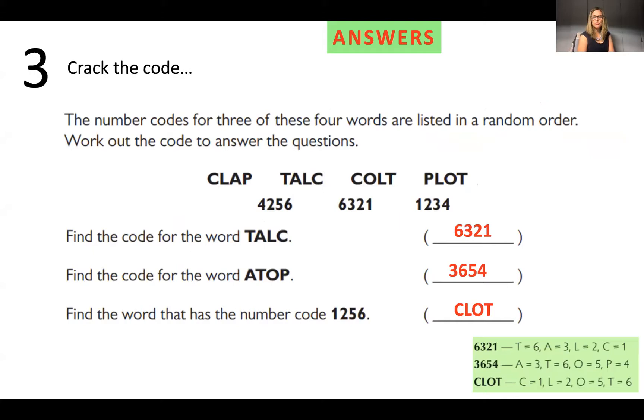Question three, we're looking at cracking the code. Now, what I find helpful with a question like this, I don't know if you can see my scribbles here. It's a bit messy. So I should have done it neater. I just lined them all up. So I wrote the four digit words and I wrote the four digit numbers so that I could line them all up. And as soon as I lined them up, I could see that the L appeared in all four letters. So that means that it has to appear, a number has to appear in all three of the codes. And the only number that does that is two.